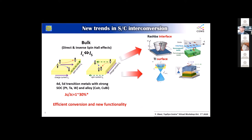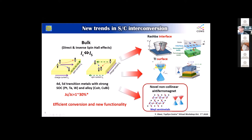All these studies have created many achievements, and we now know that metal-metal, metal-oxide, and oxide-oxide interfaces play an important role to generate spin current. Topological insulator surface states also work very well. In addition, we are now seeking new functionality, so we focus on this kind of non-collinear antiferromagnet.